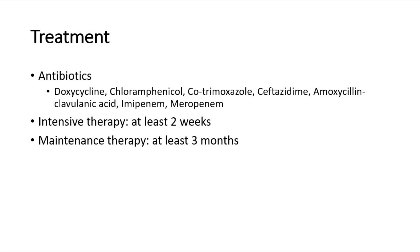For intensive therapy, given for at least two weeks, severe melioidosis and bacteremia are treated with ceftazidime, imipenem, or meropenem, with or without co-trimoxazole. For localized melioidosis, co-trimoxazole plus doxycycline can be given. Maintenance therapy includes co-trimoxazole or amoxicillin-clavulanic acid, given for at least three months, which is necessary to prevent later relapse of melioidosis.